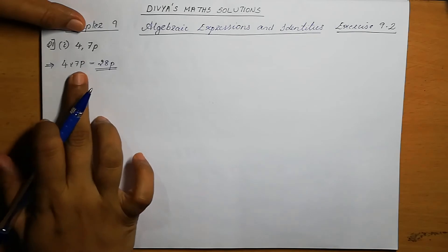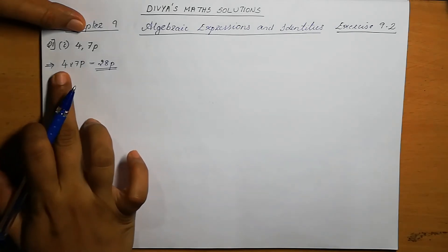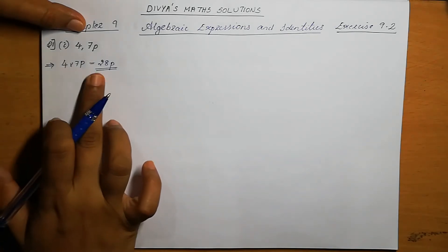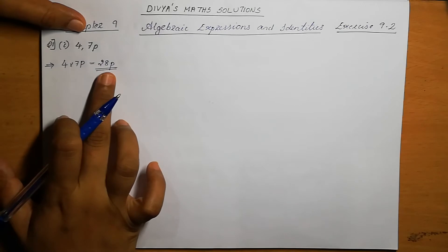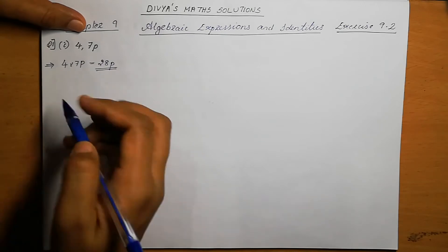7p means 7 into p only. So we are multiplying the numbers: 4 into 7 is 28, into p is 28p.